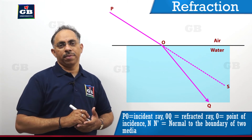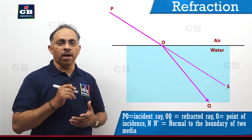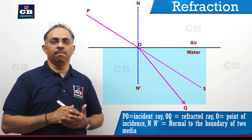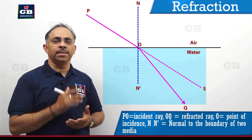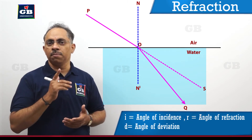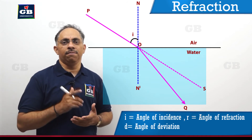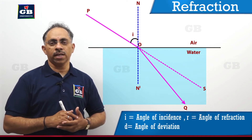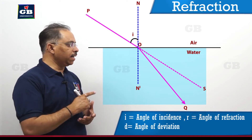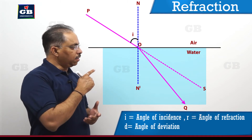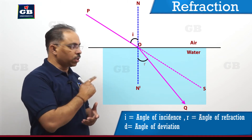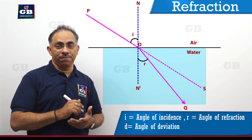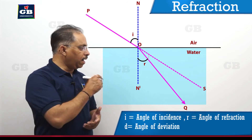O is the point of incidence. We draw a normal at the point of incidence — say NO is the normal. There is an angle between the incident ray PO and the normal NO; this angle is called the angle of incidence, denoted by i. Similarly, there is an angle between the normal ON and OQ, which is the refracted ray; this is called the angle of refraction, denoted by r in lower case.